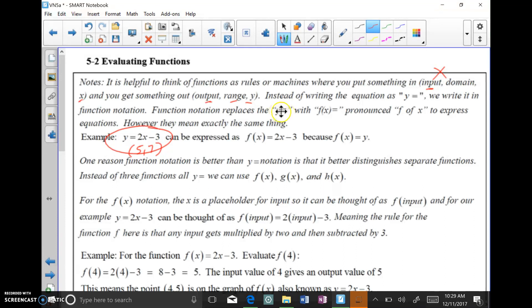Well, in function notation, instead of having a y equals in the front of our equations, we have a f of x. And it's pronounced f of x, f parentheses x, but we call it f of x. And that's just basically the notation symbol we're going to use. It is the same thing as y equals. So for this example of y equals 2x minus 3, we can do f(x) equals 2x minus 3.